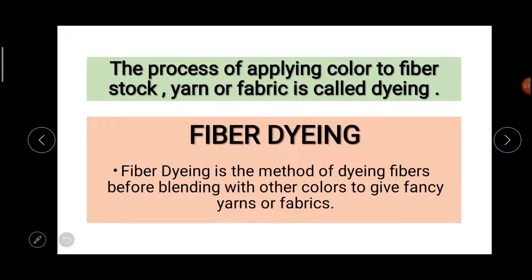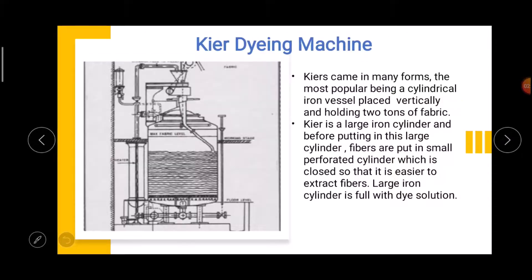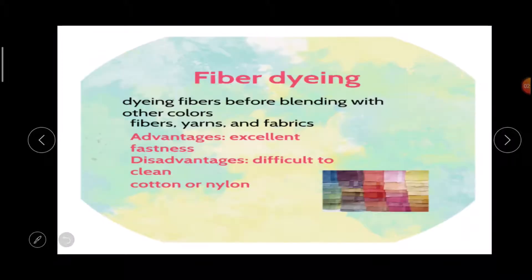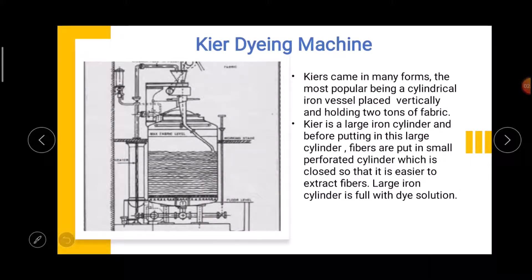In this video, I will cover fiber and yarn dyeing; the next video will cover fabric and garment dyeing. Today's first topic is fiber dyeing. Fiber dyeing is the method of dyeing fiber before blending with other colors, to give fancy effects to yarns or fabrics. The types include kier dyeing, dope dyeing, and stock dyeing machines.